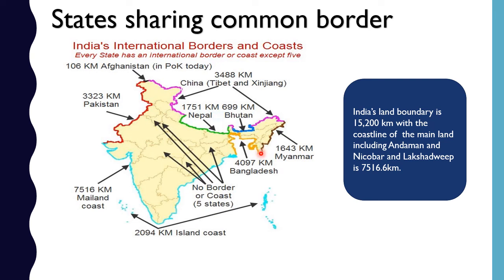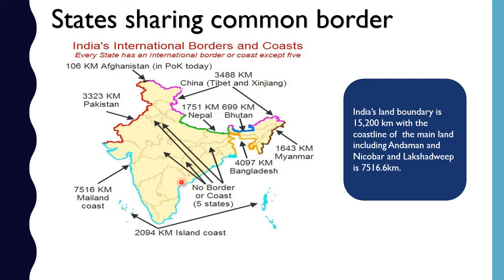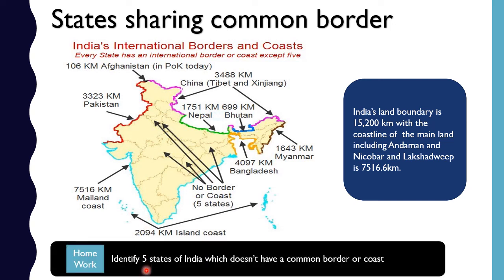Now, Indian states sharing a common border with Pakistan — the encircled states are Gujarat, Rajasthan, Punjab, and Jammu and Kashmir. These four states share the border with Pakistan. Coming to China, the states sharing a border are Jammu and Kashmir, Himachal Pradesh, Uttarakhand, Sikkim, and Arunachal Pradesh.